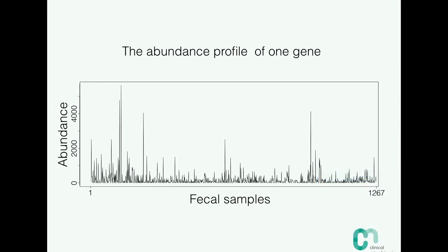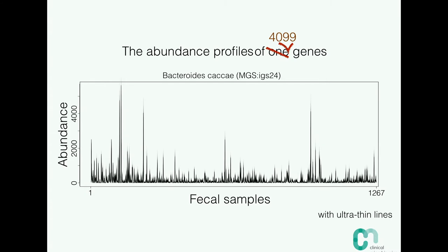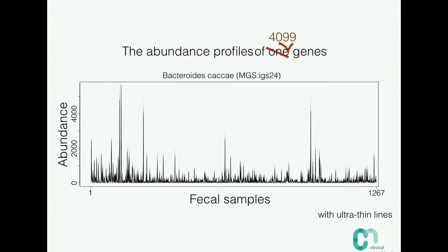Here is the abundance of one gene across 1,200 human stool samples. In some samples this gene is highly abundant; in others it is absent or very low. This gene doesn't travel alone — it travels together with all the other genes from that chromosome. Now I'm showing you 4,000 genes rather than just one, shown with extremely thin lines, and you see an extremely coherent signal. We call such a signal a metagenomic species.